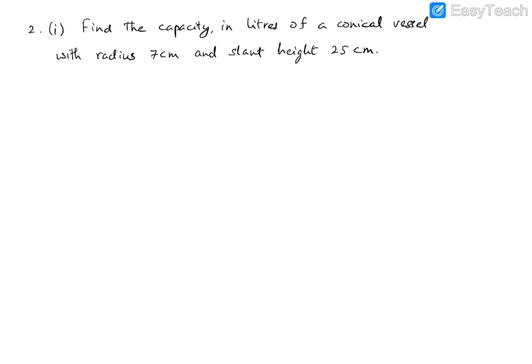The second problem asks us to find the capacity in liters of a conical vessel with radius 7 cm and slant height 25 cm. Capacity means volume. Since the slant height is given, we first need to find the height h.